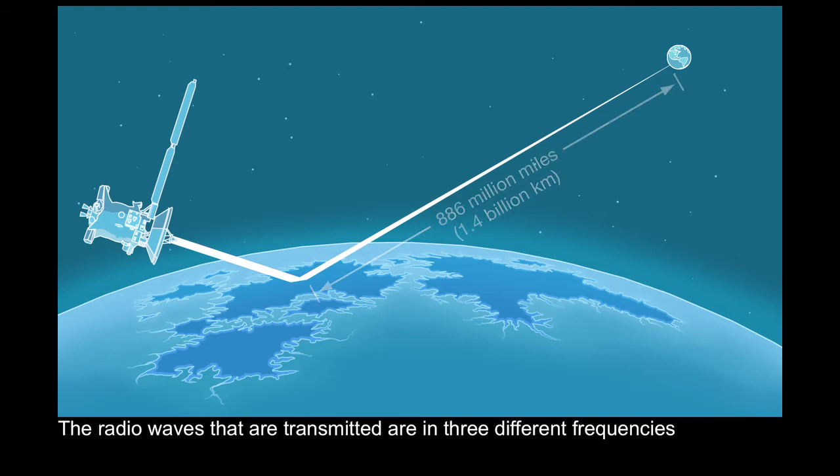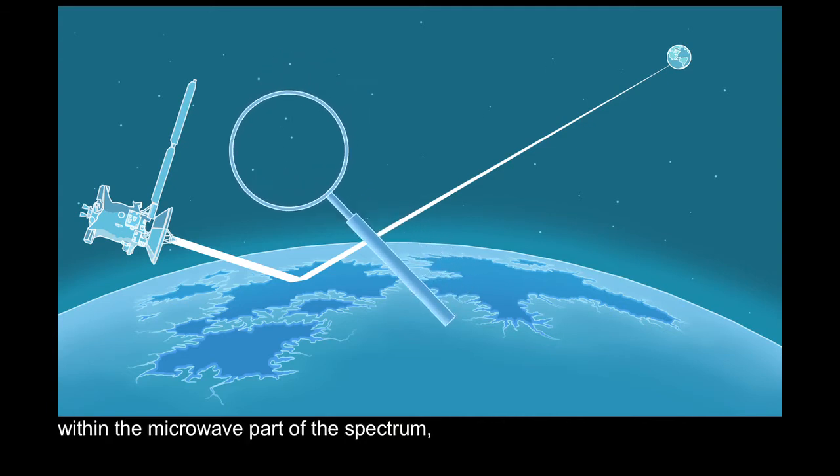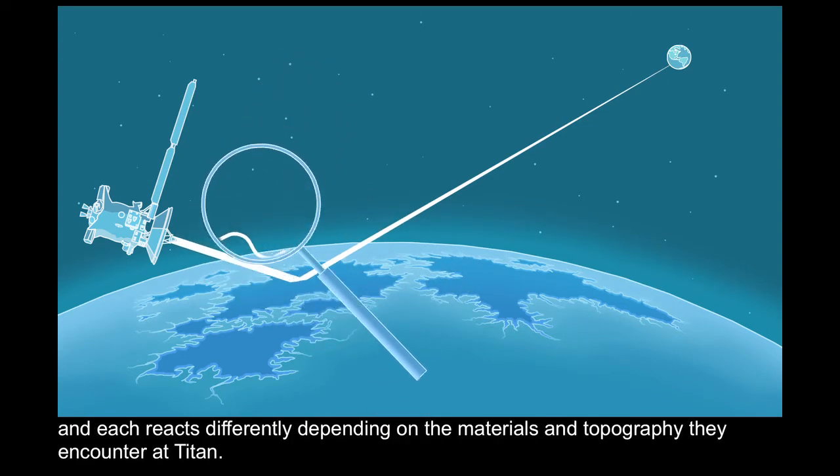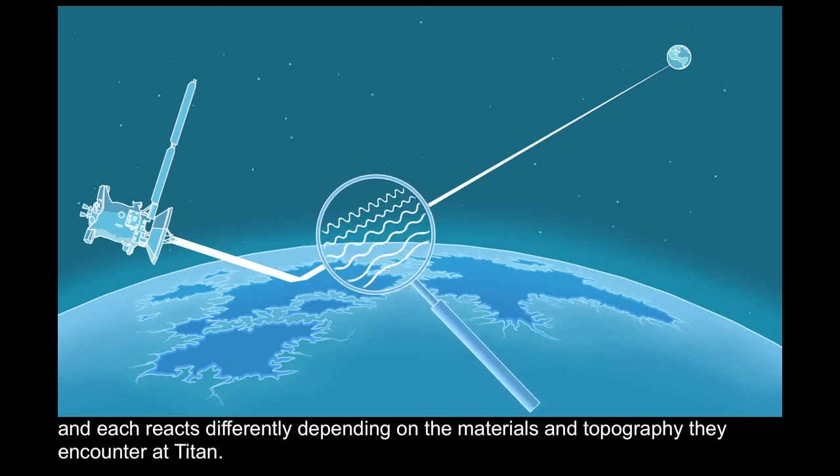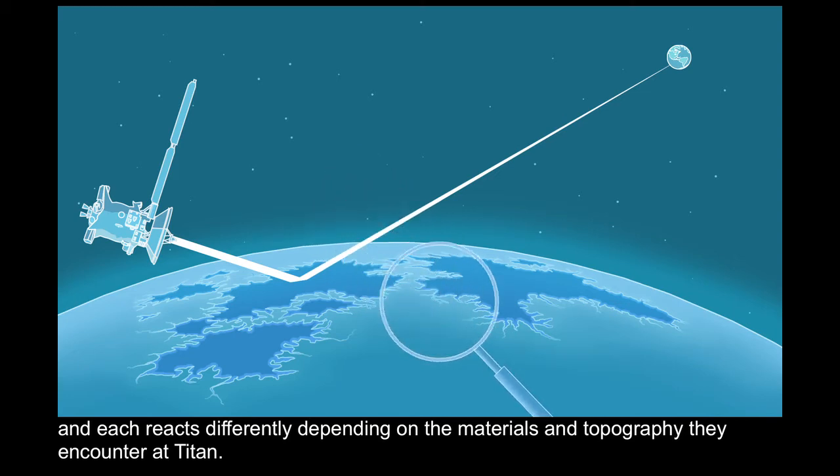The radio waves that are transmitted are in three different frequencies within the microwave part of the spectrum, and each reacts differently depending on the materials and topography they encounter at Titan.